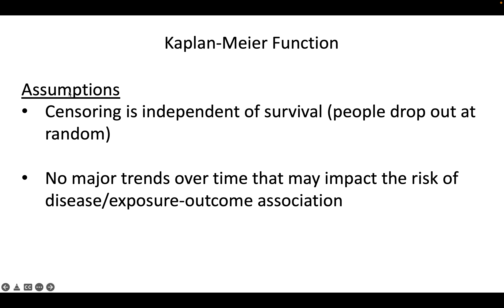Some assumptions for Kaplan-Meier are: first, censoring is independent of survival, so those who dropped out of the study early didn't drop out for reasons related to the outcome — they didn't drop out because they're really sick. Second, there are no major trends over calendar time, so those who have the event earlier are not at a higher risk than those who have the event later — risk is assumed to be roughly constant over time. That can be addressed if violated by stratifying by calendar time.